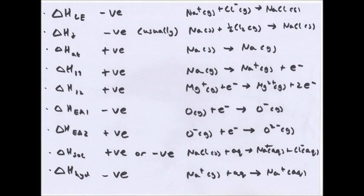The first electron affinity is the enthalpy change accompanying the addition of one electron to each atom in one mole of gaseous atoms to form one mole of gaseous 1− ions. The second electron affinity is the enthalpy change accompanying the addition of one electron to each ion in one mole of gaseous 1− ions to form one mole of gaseous 2− ions.